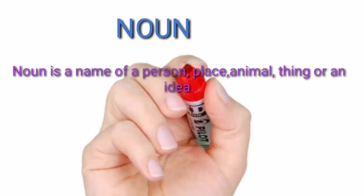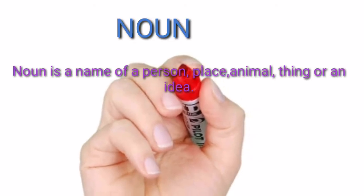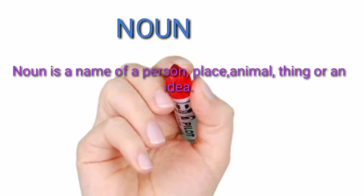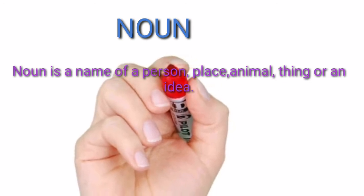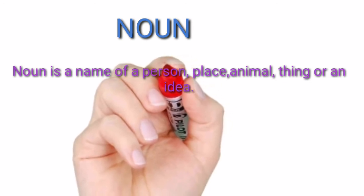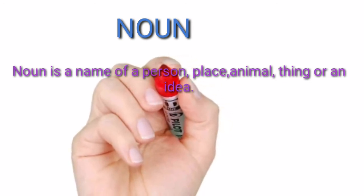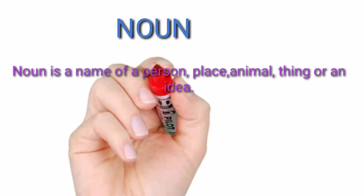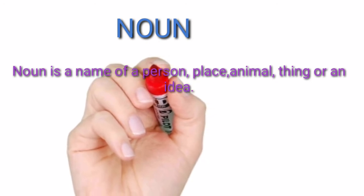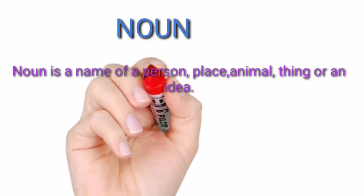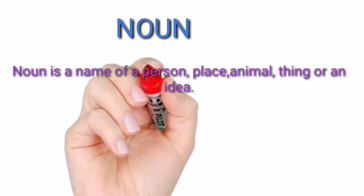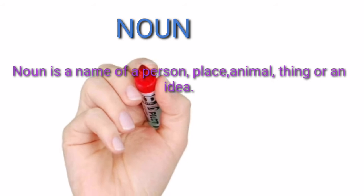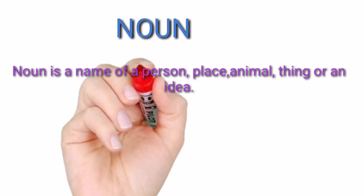The definition of a noun is: a name of a person, place, animal, thing, or an idea. Everyone has a name — persons, places, animals, or an idea.